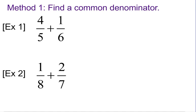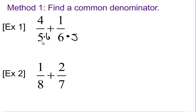The first method I'm going to show you is just finding a common denominator. The easiest way to do that is to multiply the denominators together. We do 6 times 5, so our denominator is going to be 30. Likewise, if we do 5 times 6, the denominator is also going to be 30.